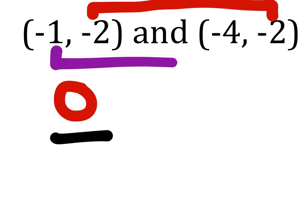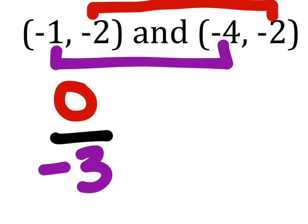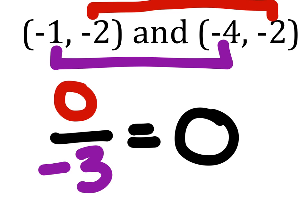How far is it from negative 1 to negative 4? You would have gone down 3. And what is 0 divided by negative 3? Zero. I highly recommend using your calculator for this because it will tell you that the answer is 0. Done.